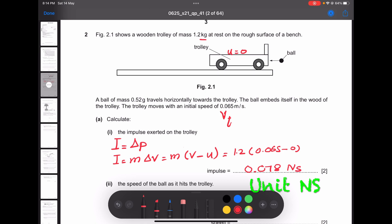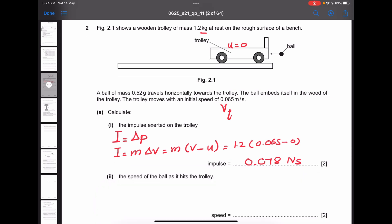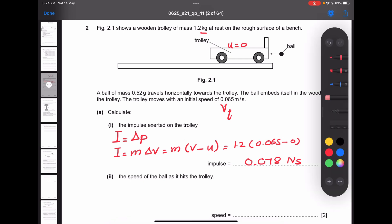For part (ii), the speed of the ball as it hits the trolley. In Cambridge, you have to ask yourself a very important question: there is an impulse, there is an impact force, or there is a change in momentum happening to the trolley. This is coming from the movement of the ball.